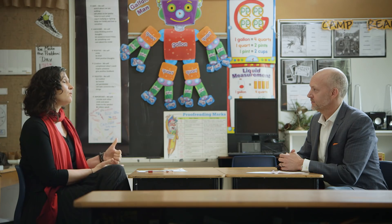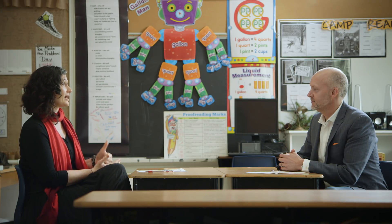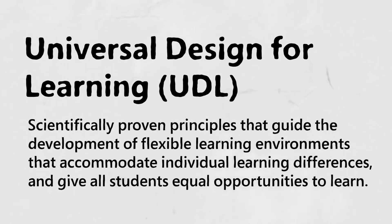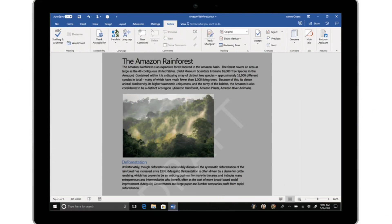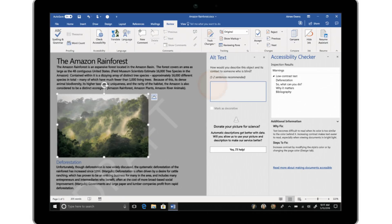What are some of the things that I might want to share with my educator friends? I've got a couple of quick tips and tricks about the built-in accessibility that's in the Microsoft products. First of all, we want to help teachers create Universal Design for Learning environments — scientifically proven principles that guide the development of flexible learning environments that accommodate individual learning differences and give all students equal opportunities to learn. So one way that teachers can create inclusive content is by always checking the accessibility of your documents. You can do that across Office 365 with the accessibility checker.